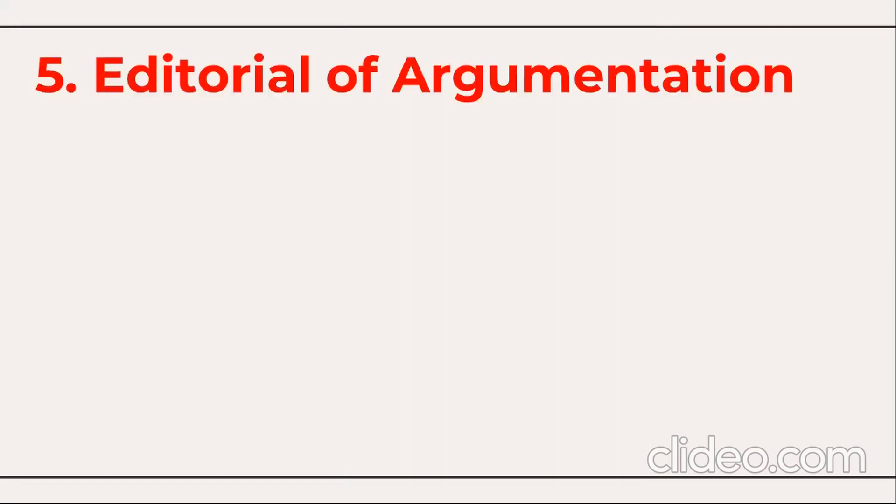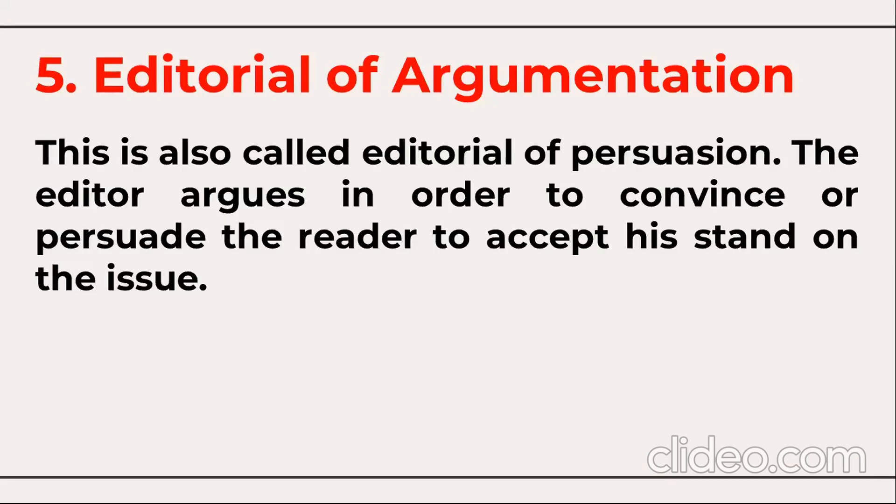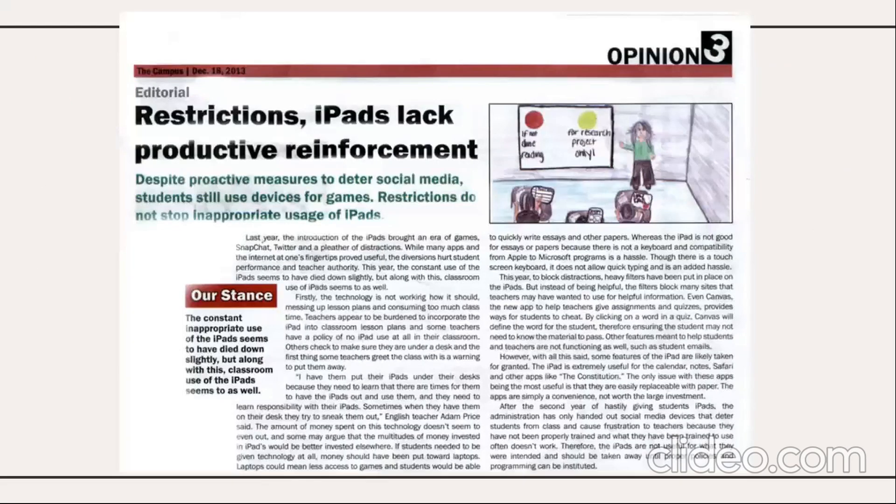Editorial number five is the editorial of argumentation, also called persuasion. The editor argues in order to convince or persuade the reader to accept his stand on the issue. The editor tries his best so that you believe whatever he says and get convinced.